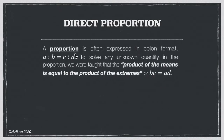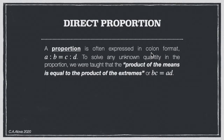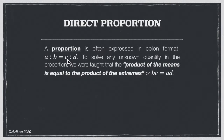A proportion is often expressed in column format — we read it as 'a is to b equals c is to d.' To solve any unknown quantity, the product of the means equals the product of the extremes. The means are the inner terms (b and c), the extremes are the outer terms (a and d). So b times c equals a times d, giving us bc = ad.